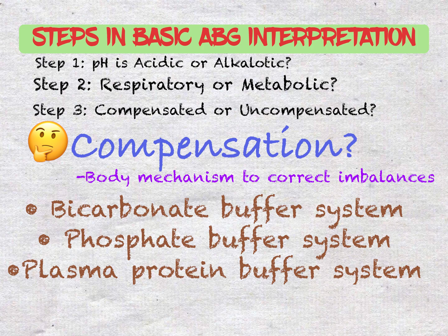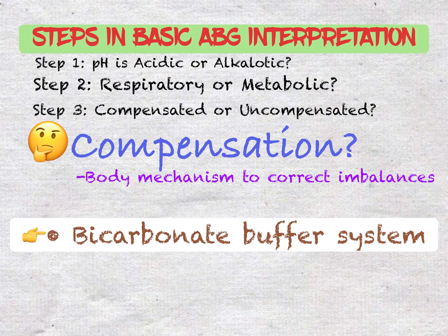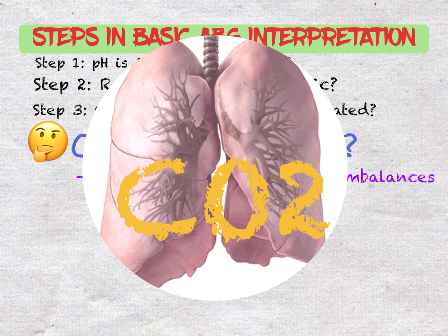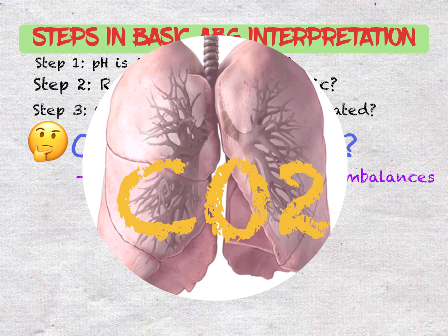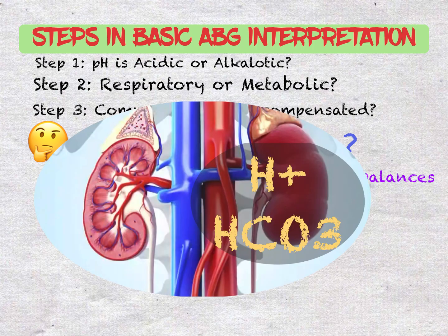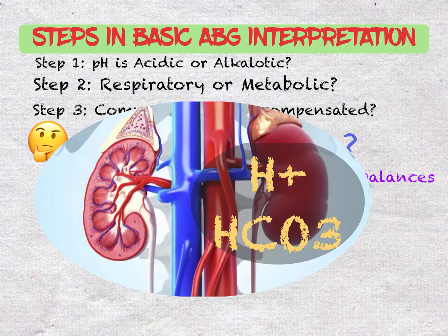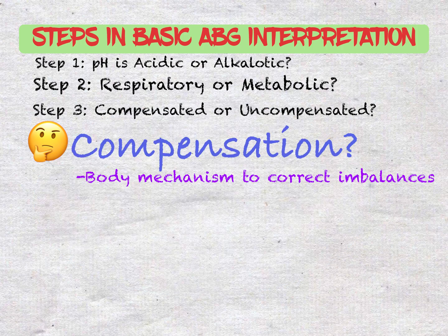Of the three buffer systems, the bicarbonate buffer system is arguably the most important, as it is the only one coupled to the respiratory system. It takes only seconds for chemical buffers in the blood to make pH adjustments. The respiratory tract can adjust blood pH upward within a minute by exhaling carbon dioxide. The renal system can also adjust blood pH through excretion of hydrogen ions and conservation of bicarbonate, but this process takes hours to days to take effect.